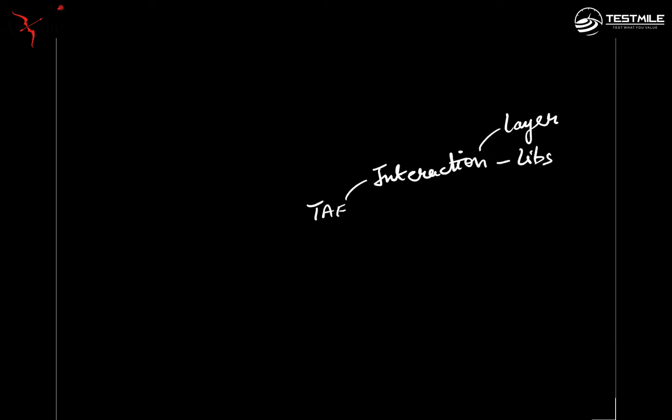It could be in the format of some static or procedural style of code, or it could be in the format of some classes in which you have wrapped the raw functionality, maybe clubbing multiple things together to give an easy-to-use method on top. Slowly, you keep creating more and more of these wrappers, and it reaches a stage where your framework has its own domain specific language — a DSL. The people who create these frameworks are knowledgeable about the underlying interaction library as well as the framework structure, but the users are conversant only with the DSL of your framework.